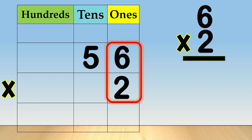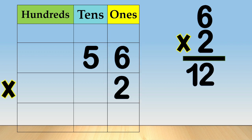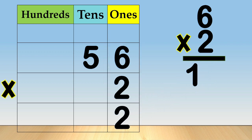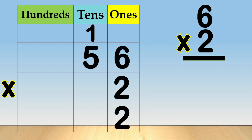So, six times two is equal to twelve. Now, we need to regroup twelve ones as one ten plus two ones. Write two in the ones column.